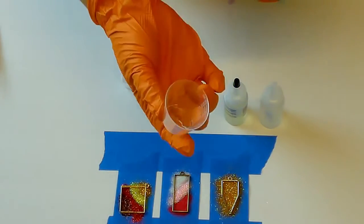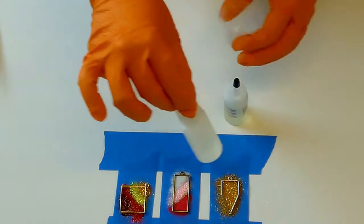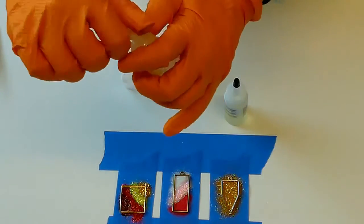To mix the resin, use the measuring cups. With your gloves on, pour the resin to the 5mm mark. Be as precise as possible.